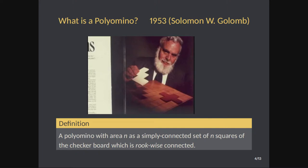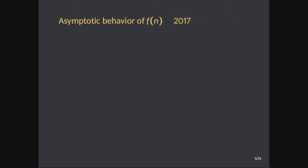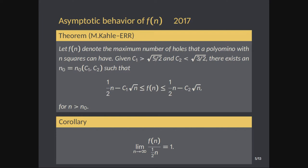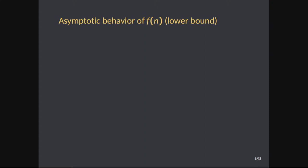When Solomon Golomb defined polyominoes, it was a simply connected figure, but we know that is no longer the case. The asymptotic behavior of the function capturing the maximum number of holes is sandwiched between (1/2)n minus some square root of n, and (1/2)n plus some other square root of n. So when this goes to infinity and you divide by n, you get one half. The corollary is that in the long run you can create one hole per each two tiles.